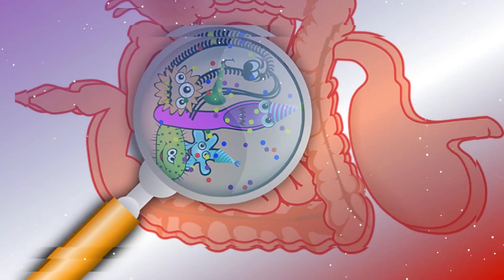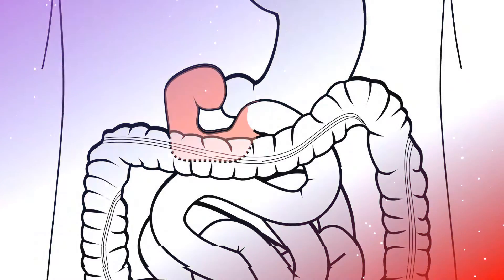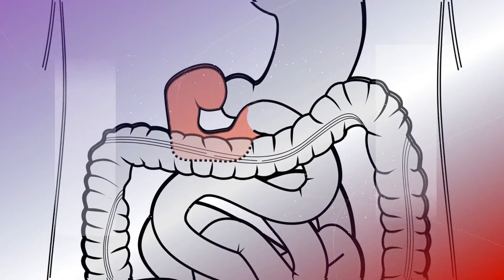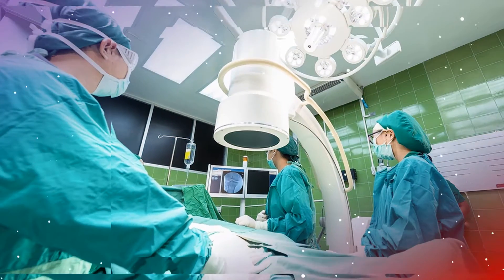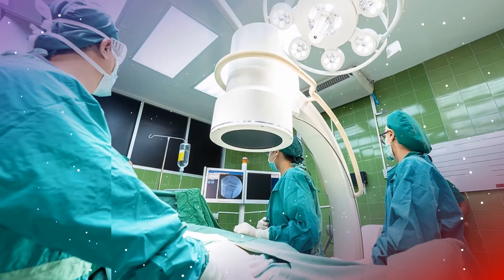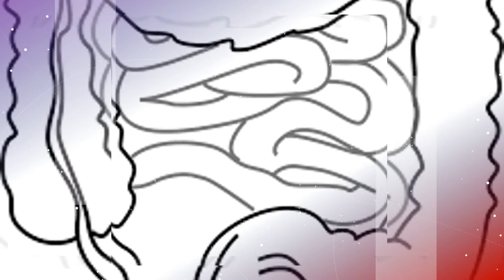Crohn's Disease can disrupt the normal function of the bowel in a number of ways. The bowel tissue may: 1. Swell, thicken, or form scar tissue, leading to blockage of the passageway inside the bowel. 2. Develop ulcers that can involve the deep layers of the bowel wall. 3. Lose its ability to absorb nutrients from digested foods, a condition called malabsorption. 4. Develop abnormal passageways known as fistulas from one part of the bowel to another, or from the bowel to nearby tissues such as the bladder or vagina.